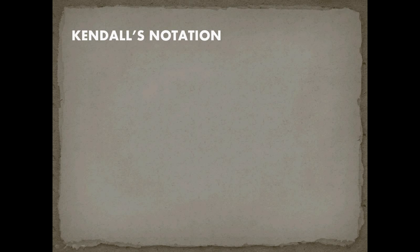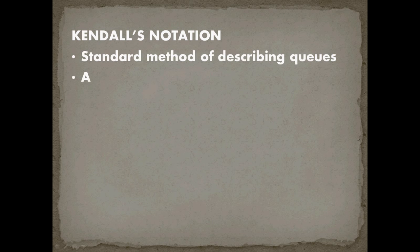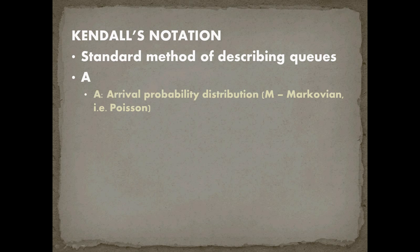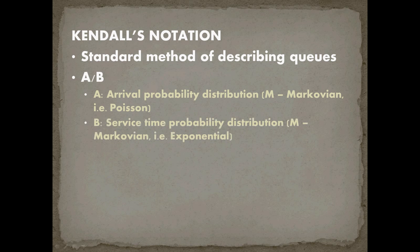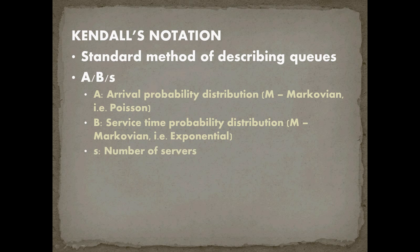Kendall's notation is the common way analytic queues are described. The first element, A, tells us the probability distribution for arrivals — if it's Poisson, it's denoted M for the Markovian family. The second element, B, is the service time distribution — M again means exponential. The third element, S, is the number of servers. With these three things, we have enough information to model any queue.